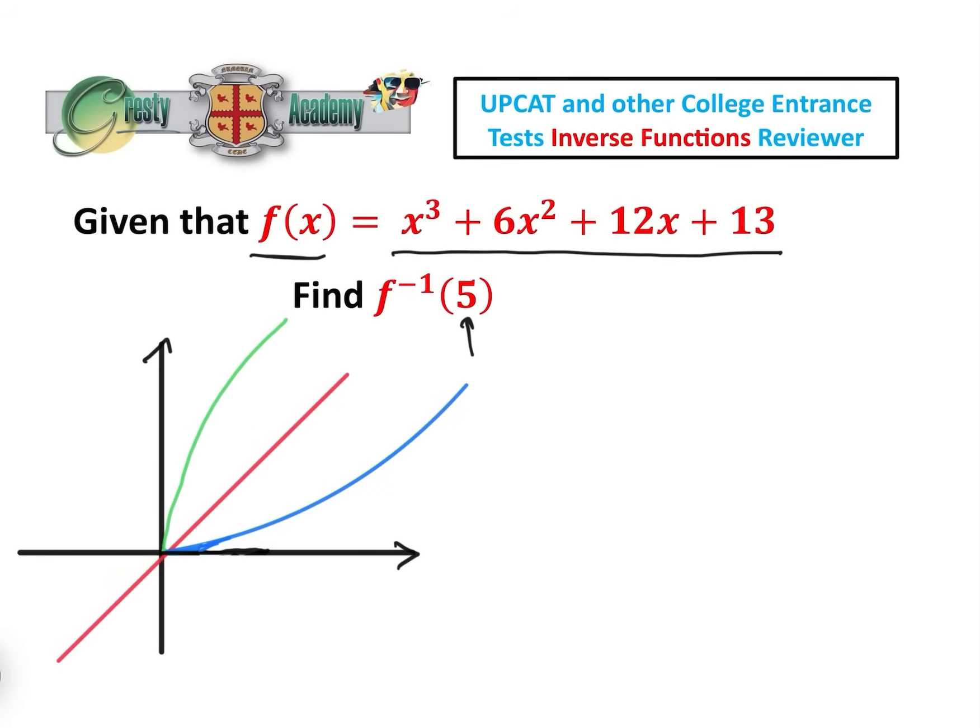Now you might think that we need to find the inverse function first, but finding the inverse function of this is no easy matter, and in actual fact there's a better way of doing it anyway. So let's just imagine, let's go right back to the basics and imagine that this blue line here is f(x), and this green one, which is the reflection in the line y equals x, is f inverse of x.